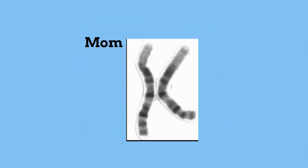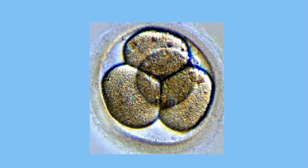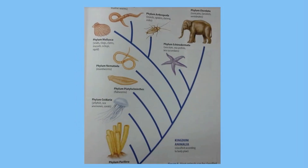Animals are diploid, meaning each cell has a homologous pair of chromosomes. This means that they have two sets of chromosomes — one from mom and one from dad — and animals develop from an embryo.